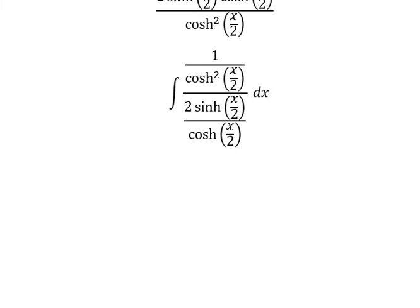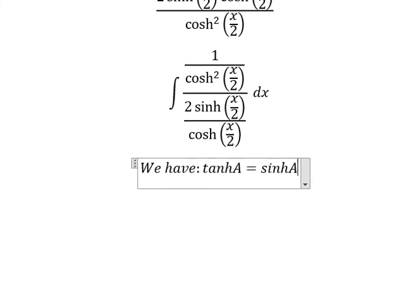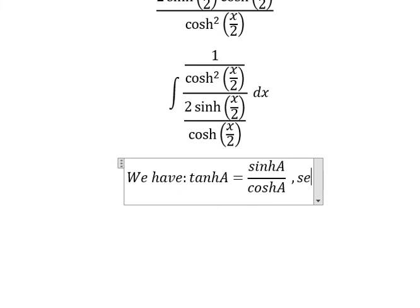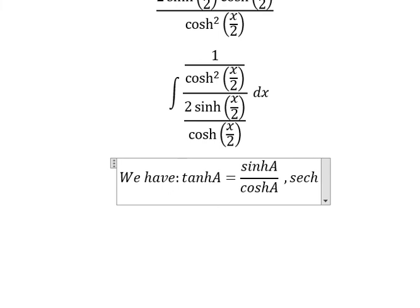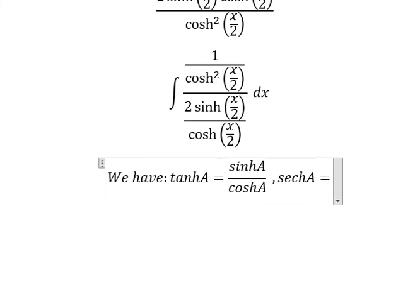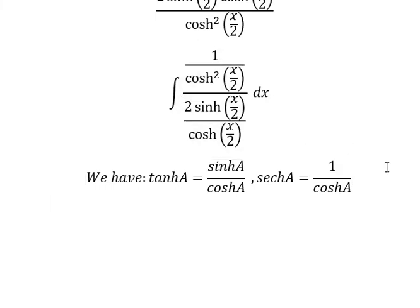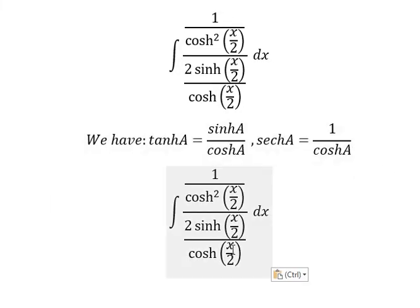Next we have tan A equals sine A over cosine A, and the second one, secant of A equals one over cosine A. So we apply two formulas here.